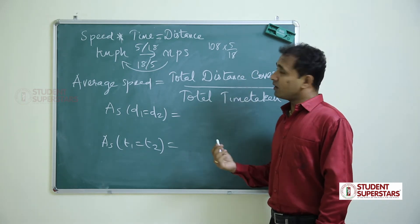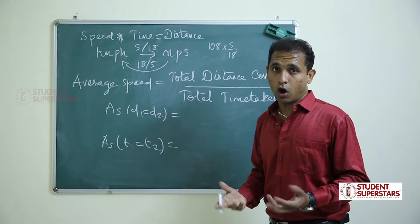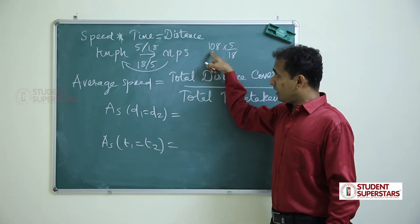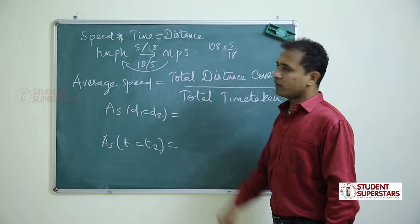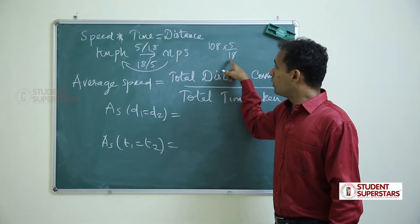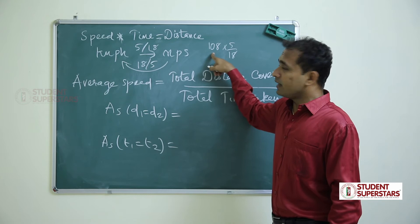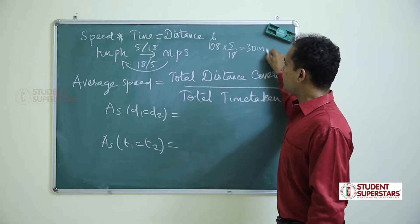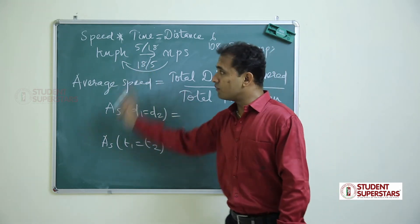Now, which approach is better? Attitude is all about approach. See, 18 is there and 108 is a multiple of 18 — how many 18s are in 108? Six. So 6 × 5 = 30 meter per second. So we should know the conversion.